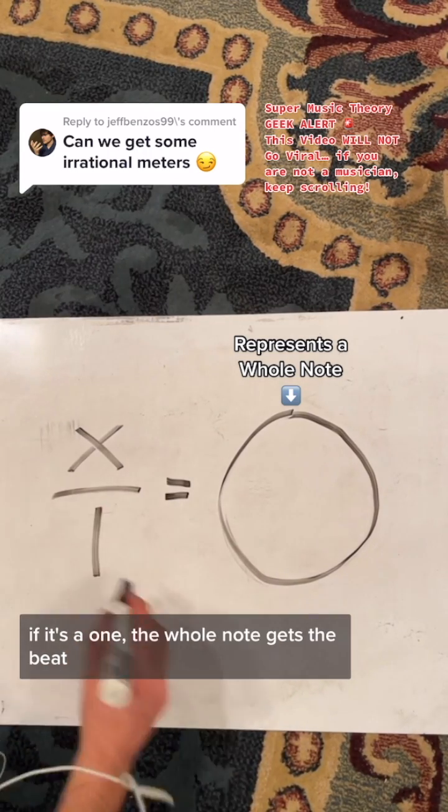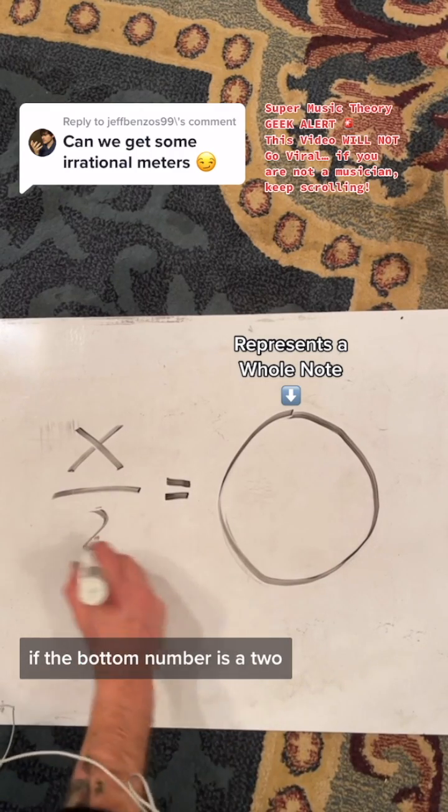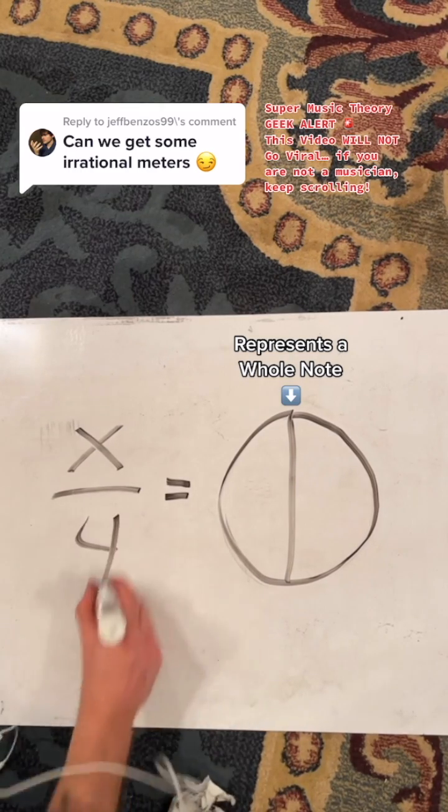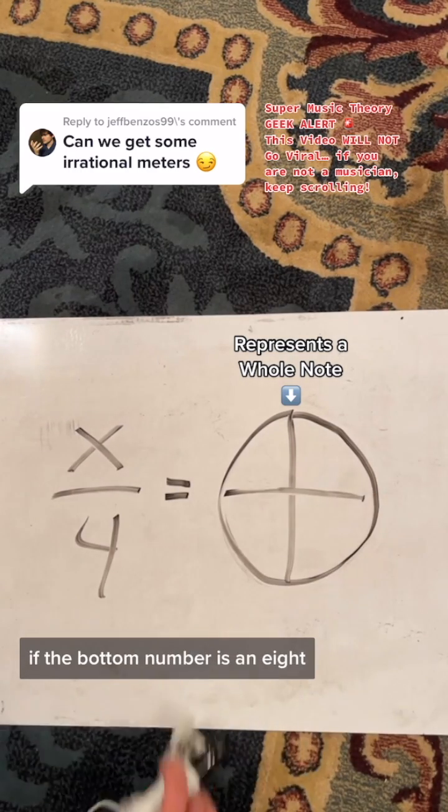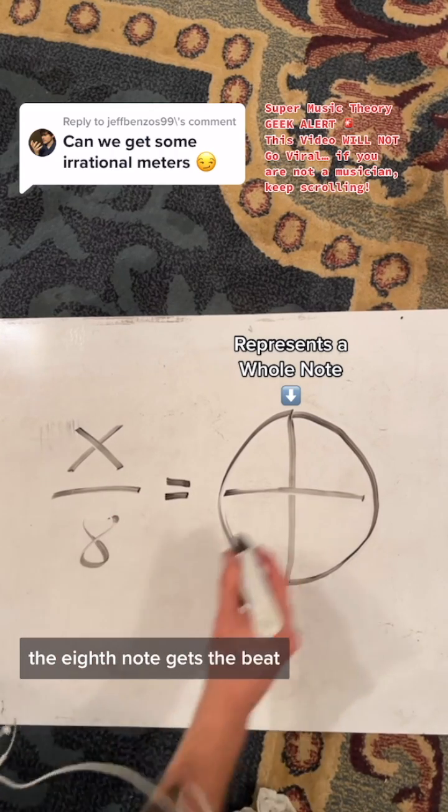So the bottom number, if it's a one, the whole note gets the beat. If the bottom number is a two, the half note gets the beat. If the bottom number is a four, the quarter note gets the beat. If the bottom number is an eight, the eighth note gets the beat.